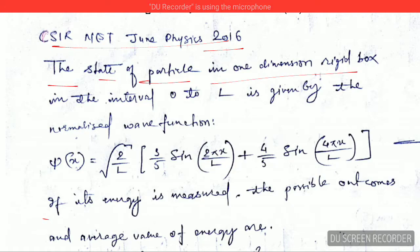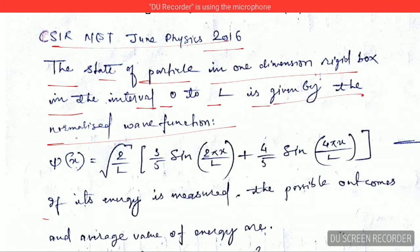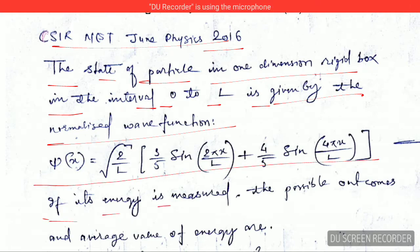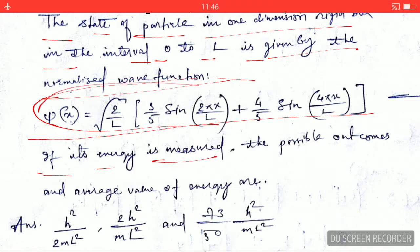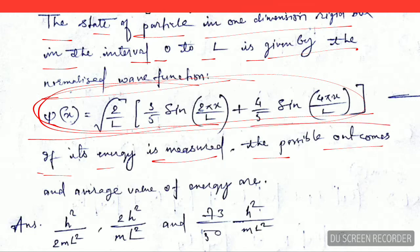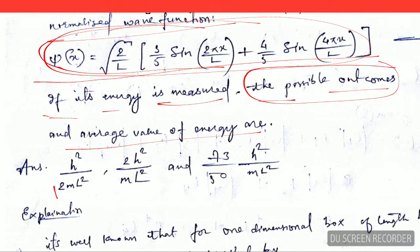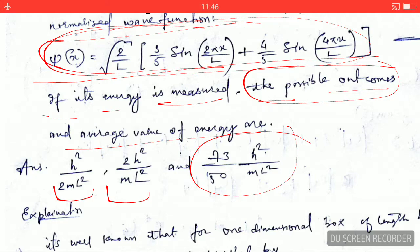The state of a particle in a one-dimensional rigid box in the interval 0 to L is given by the normalized wave function shown here. If we measure the energy of the particle in this state, the possible outcomes of the energy and the average energy are to be determined. Let's see how to arrive at the answer and solve this type of question.